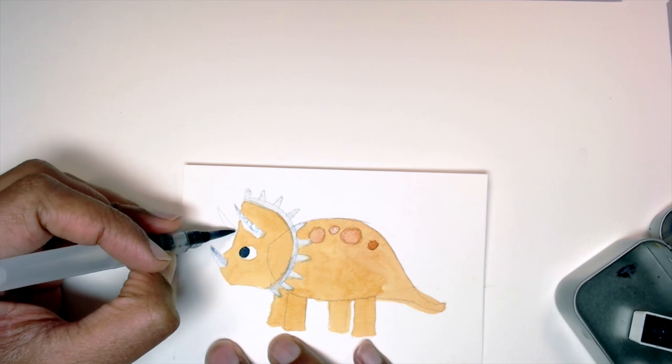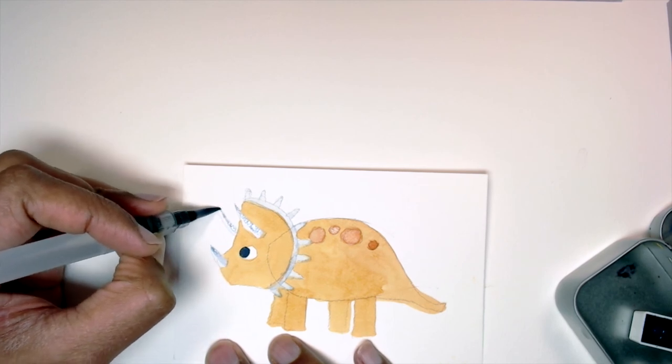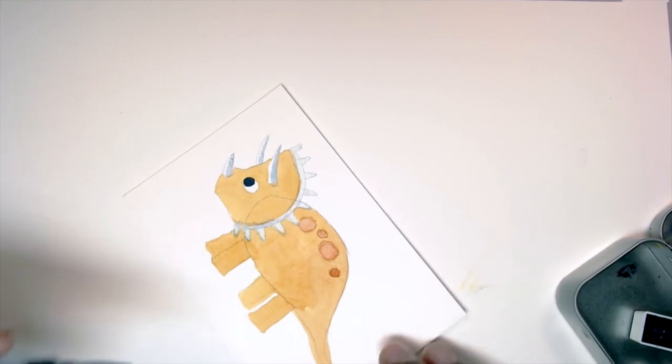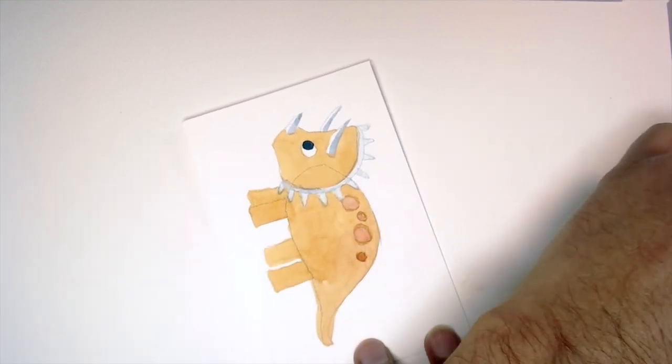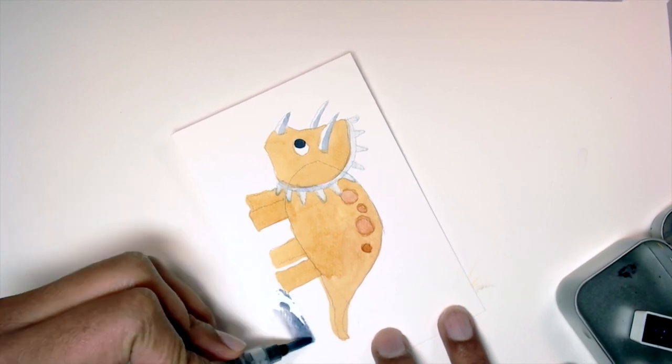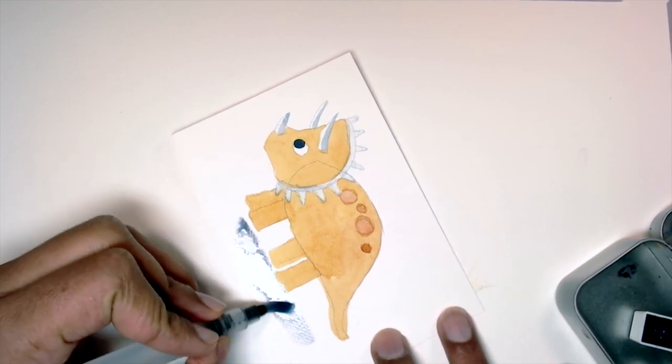The main, you know, the horn is white, but it's just casting a little bit of shadow. And then the last thing I'll do is paint a little ground for my triceratops to stand on.